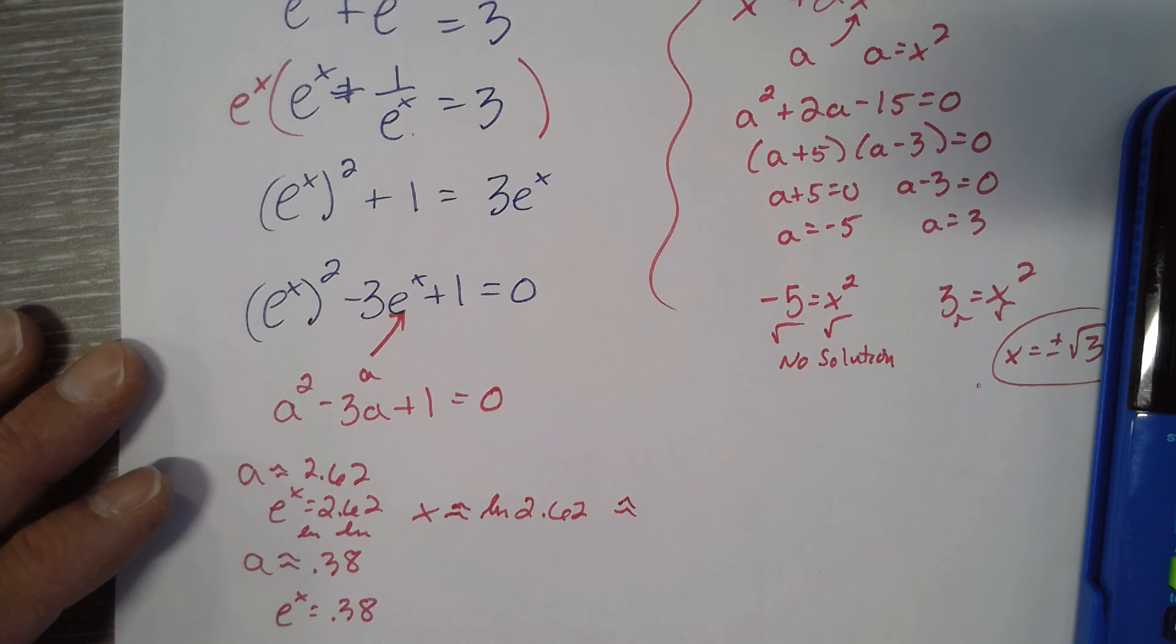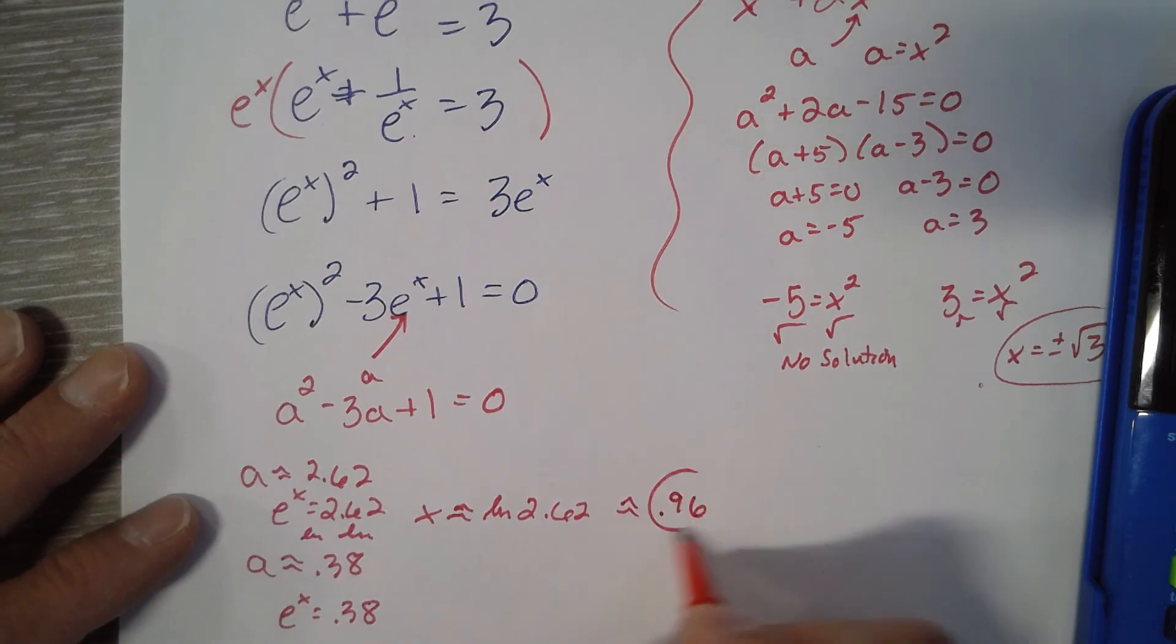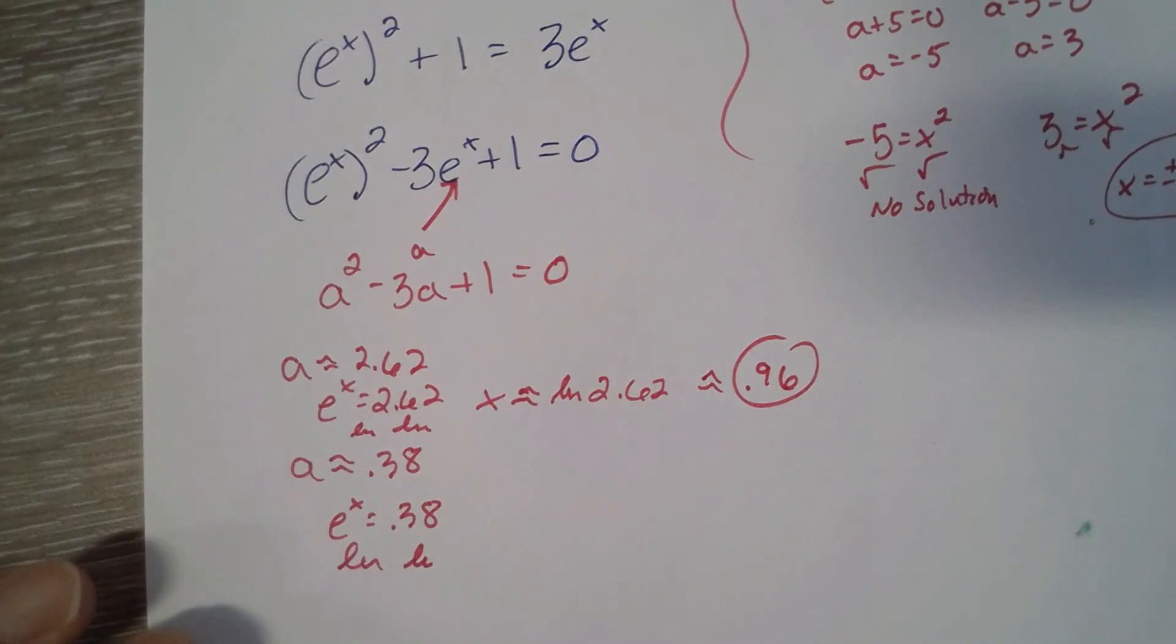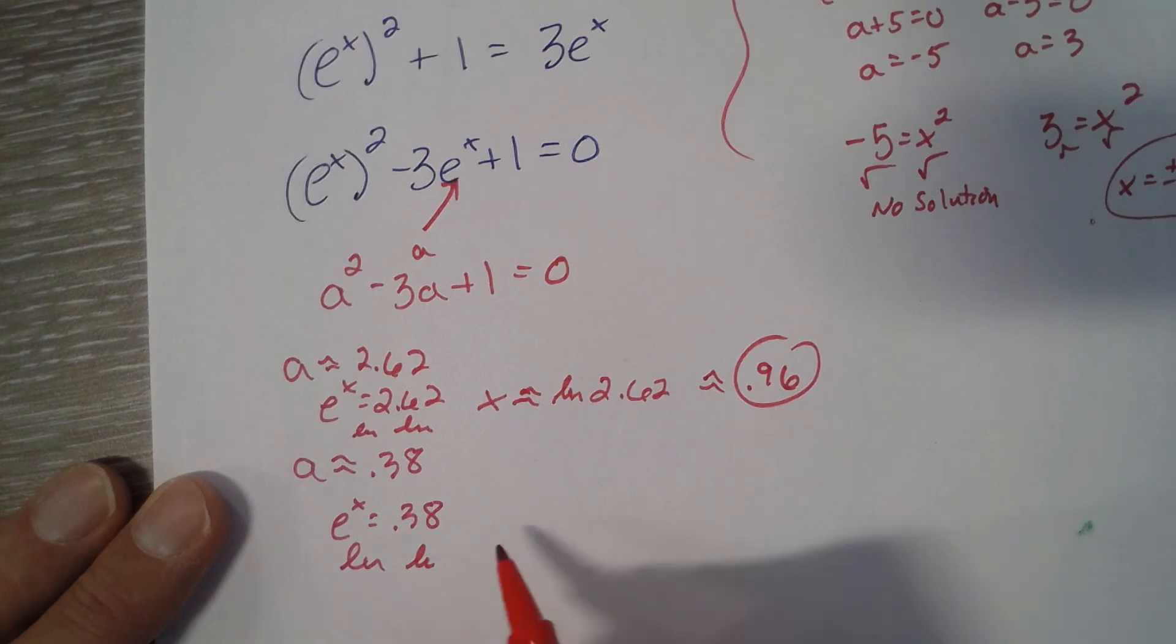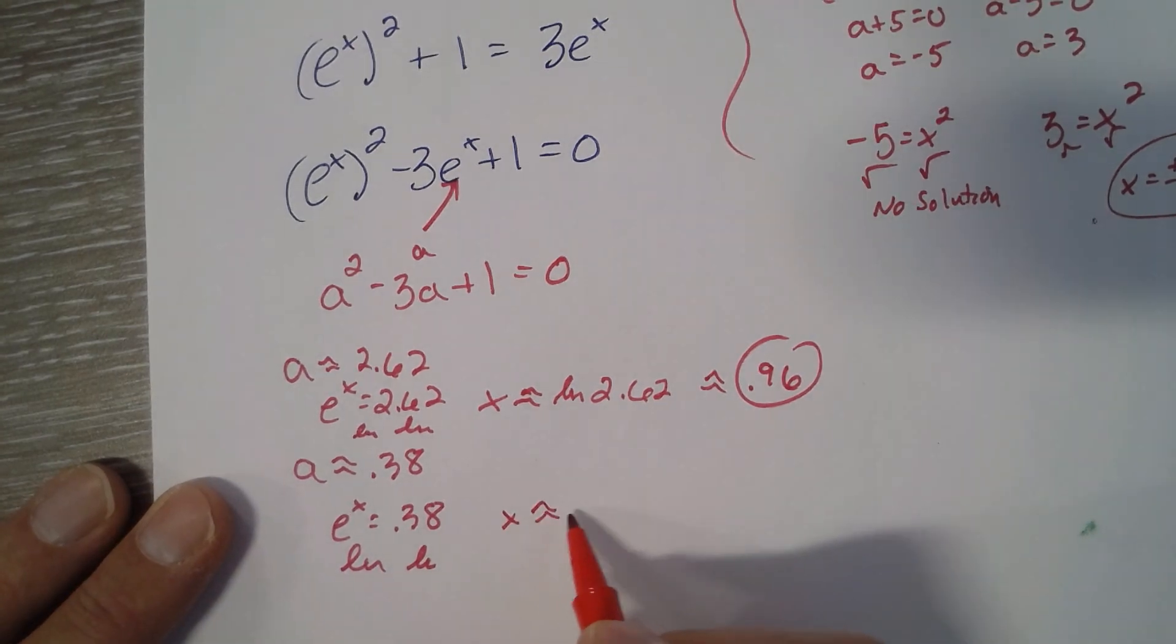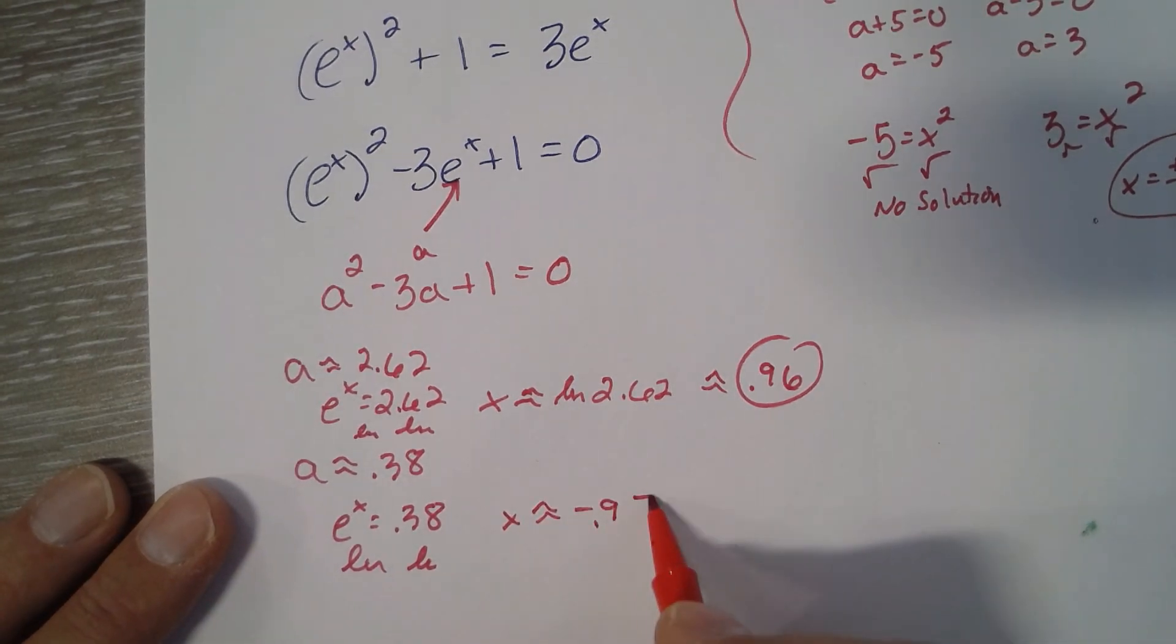Natural log of 2.62, I get 0.96. Natural log of 0.38 is negative 0.97. Those are our two answers.